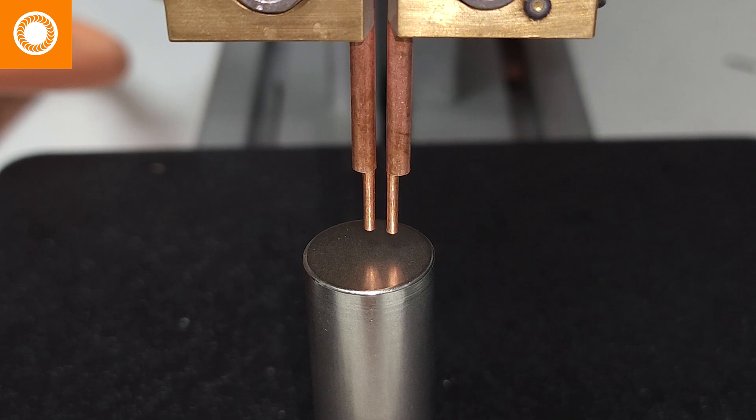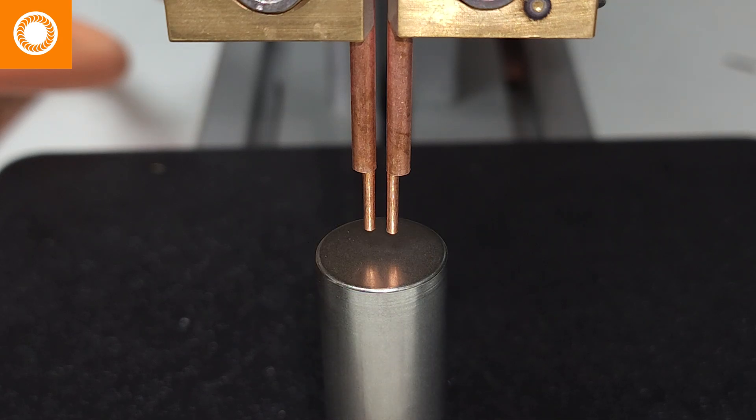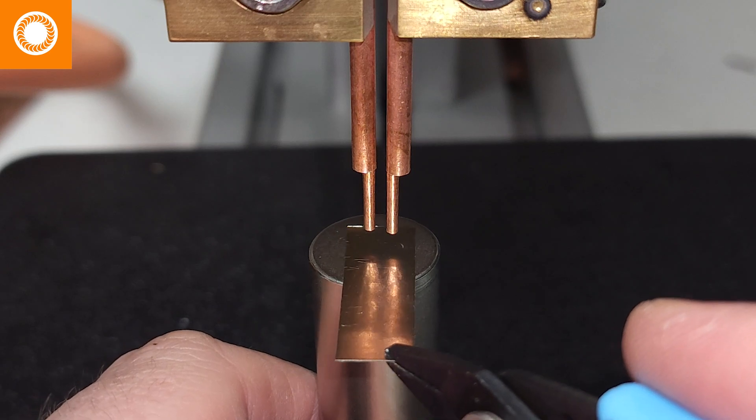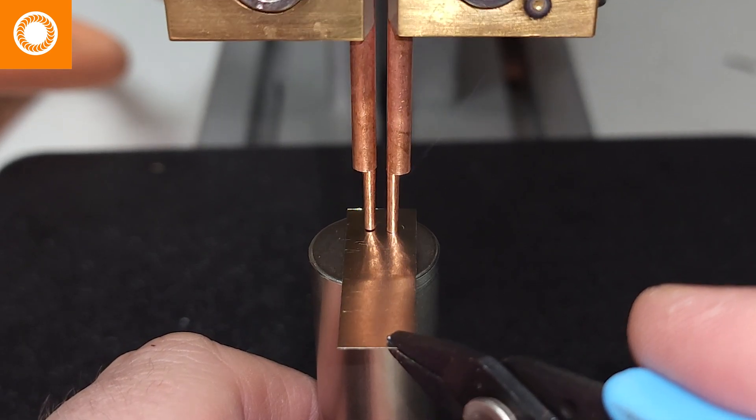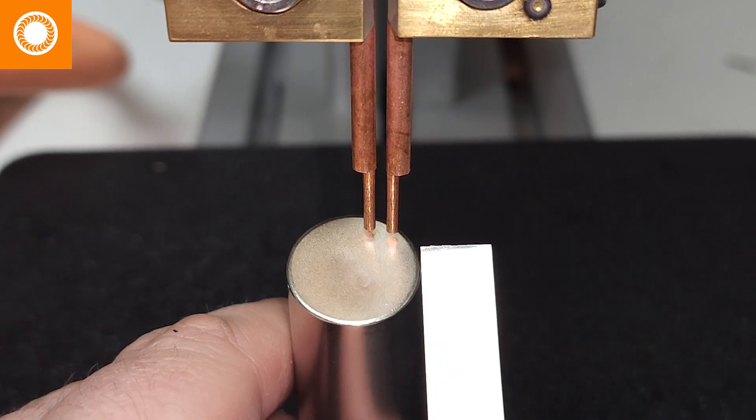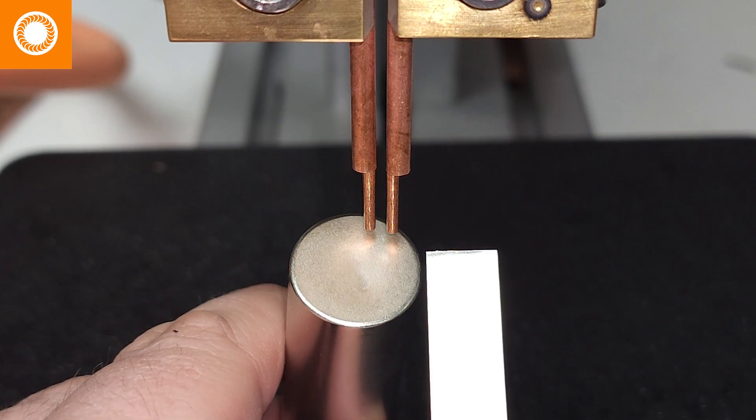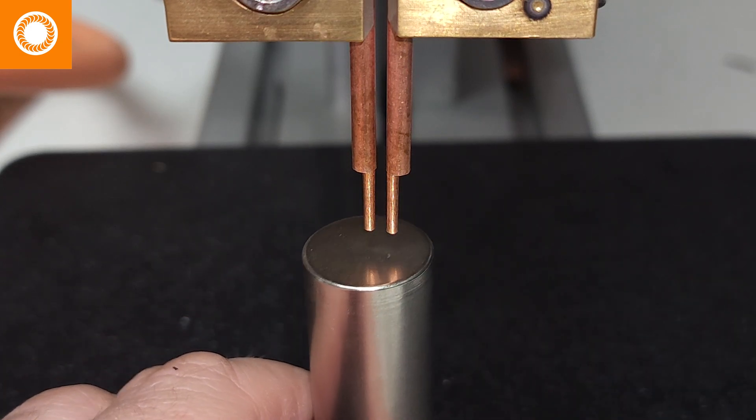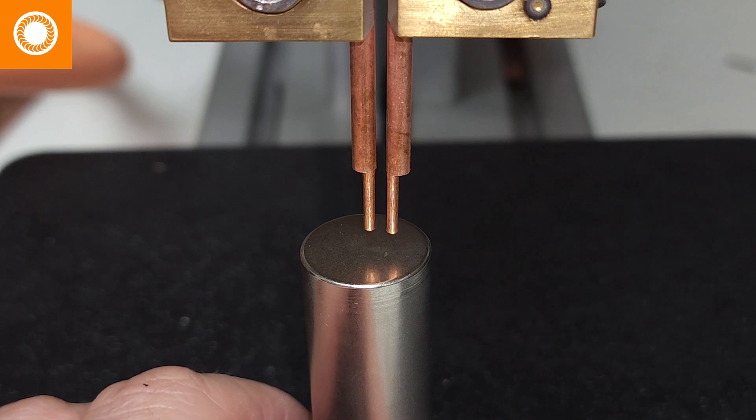I'm going to set it to, we'll say, 50 total stored energy. For this experiment I'm going to leave off pulse one and then with pulse two send it to 50 watt seconds. Now I'm going to engage a weld so we can see what that looks like. We can see a weld occurred but not enough power to make a weld.